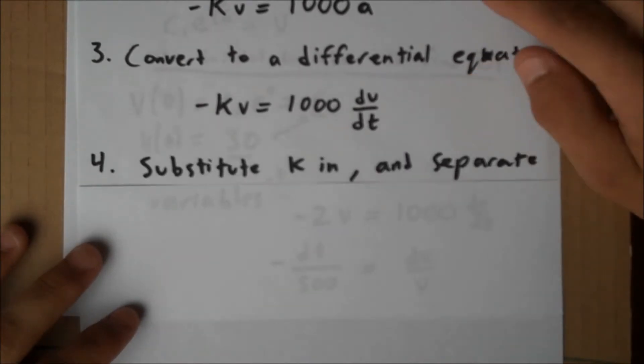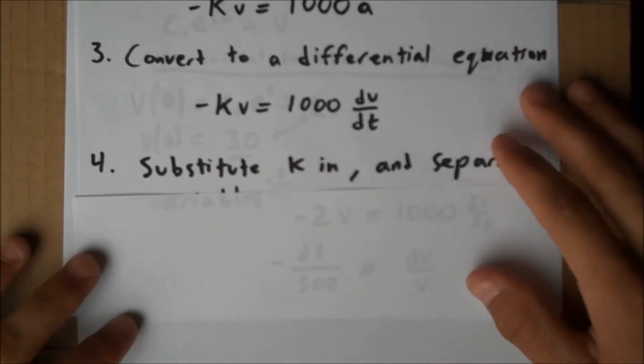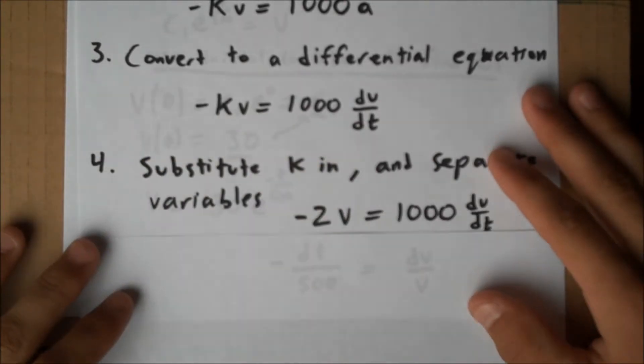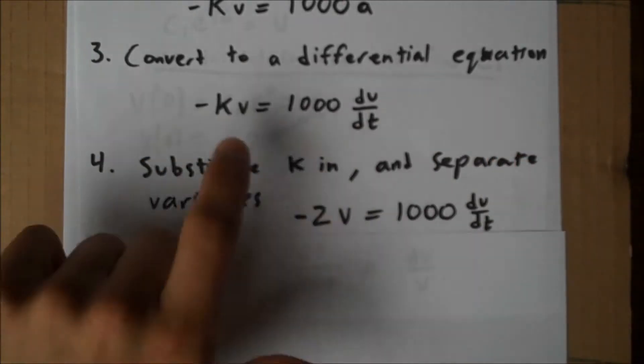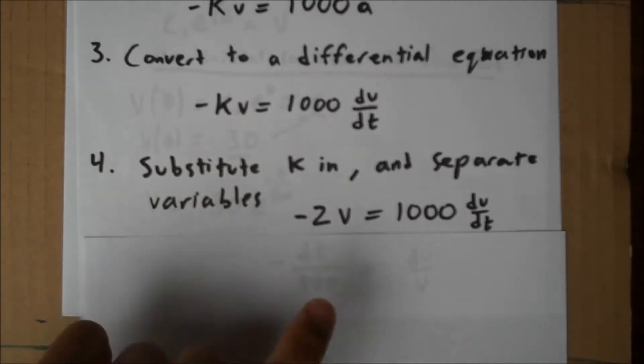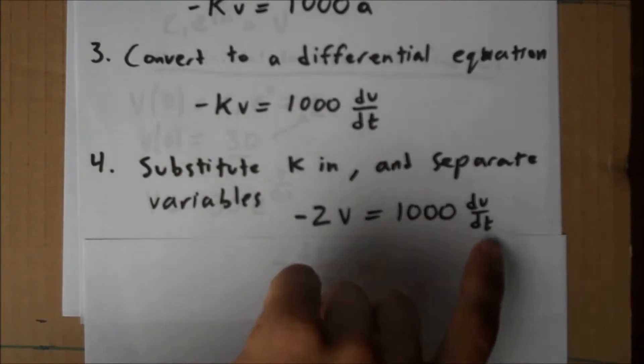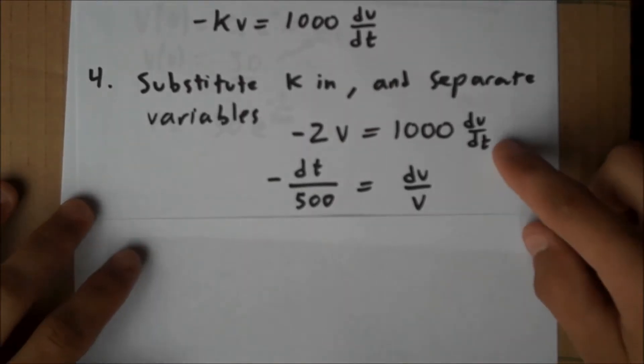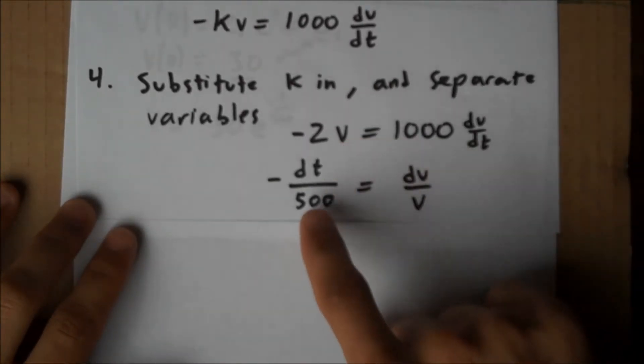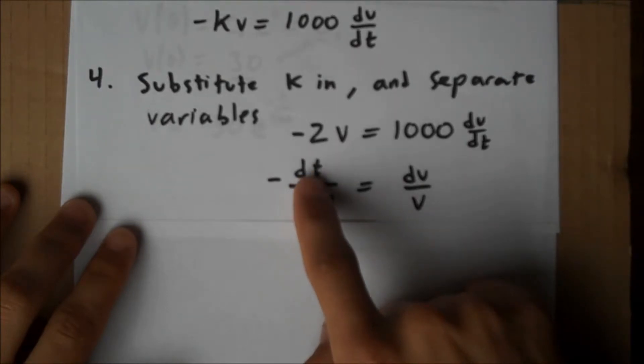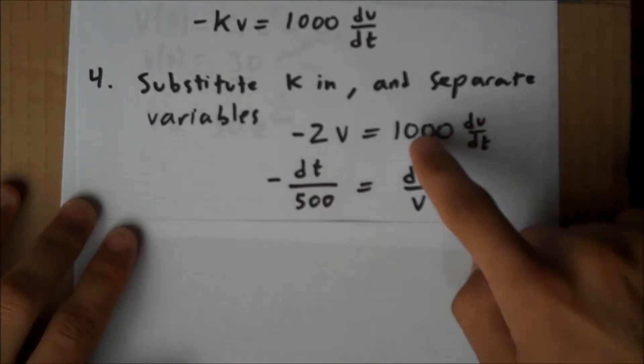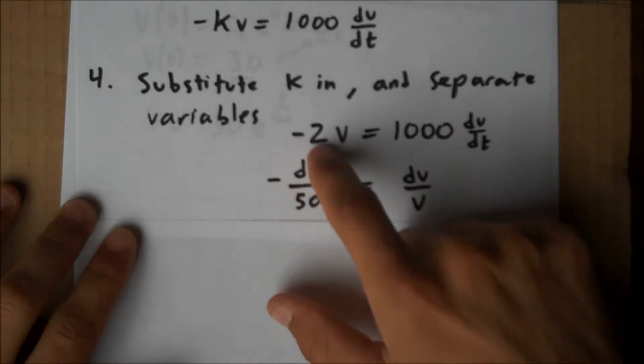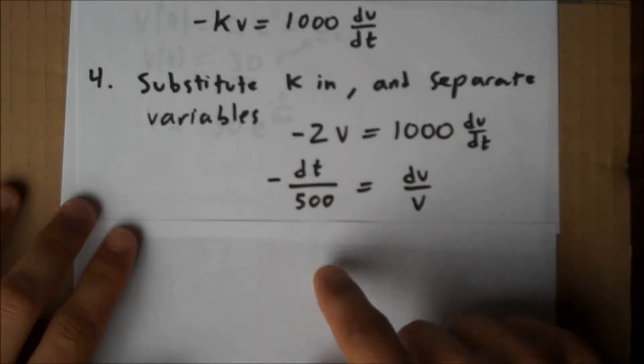So step four, we'll substitute what we know to be k into the equation, and separate our variables, because this is a separable differential equation. So first, we'll substitute 2 in for k, as the problem stated, equal to 1,000 dv/dt. Then, we'll multiply the dt differential over to this side, we'll divide the v to this side, so that it's now below the dv, and we'll divide by 1,000, so that we have negative 2 over 1,000, giving us negative 500.